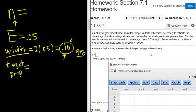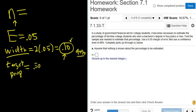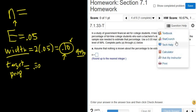So it says assume that nothing is known about the percentage to be estimated. Right. So we have to assume that there's a 50-50 chance either way for whatever it is we're talking about. So in this case, we're talking about the percentage of college students who earn a bachelor's degree in four years or less. So we have to assume it's 0.5. So we assume nothing. So we leave it at 50-50.